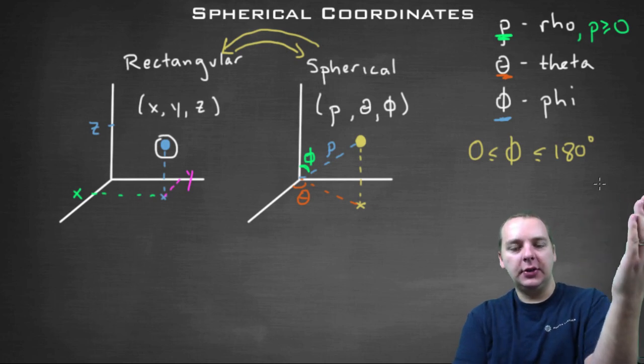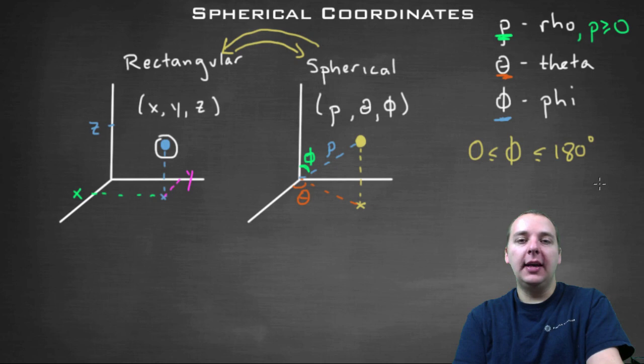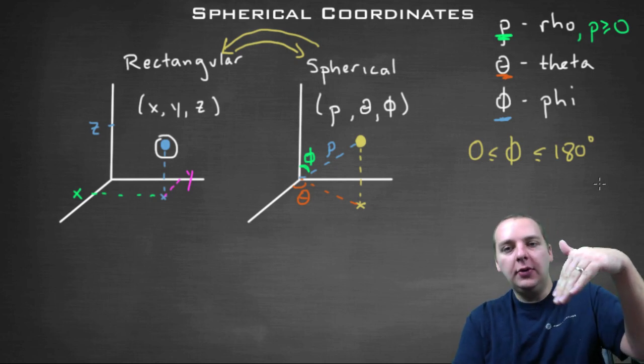But then as your point leaves the positive z axis, then you get a little bit of an angle, and then anywhere in the x-y plane would be 90 degrees, and then you keep going and keep going until you get to 180.